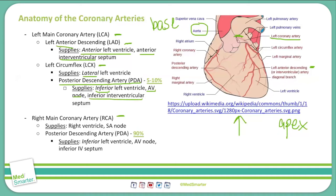Why is it important that the PDA supplies the AV node? Because if you have an occlusion of the posterior descending artery — a myocardial infarction involving the PDA — you could generate an arrhythmia because the AV node loses its blood supply. This is a topic that comes up frequently in USMLE practice questions, so it's definitely one you want to remember.